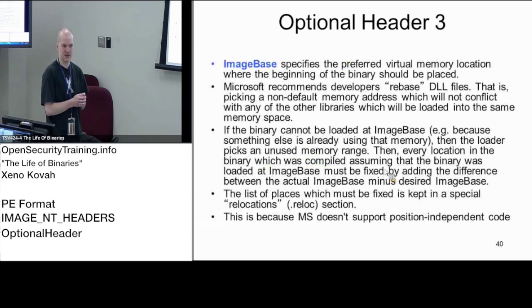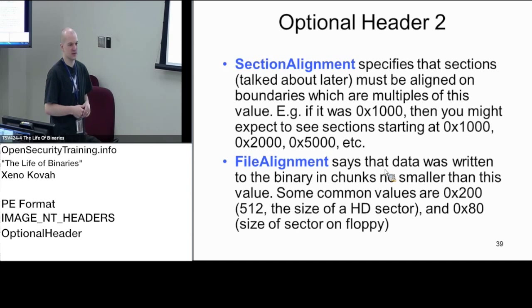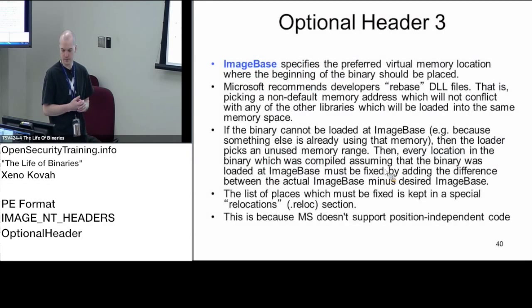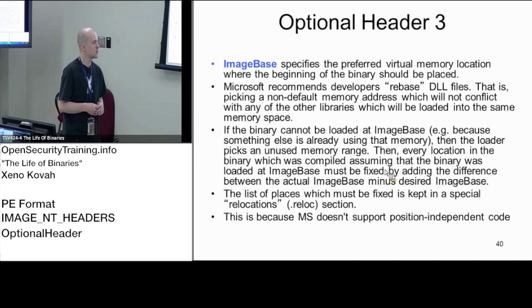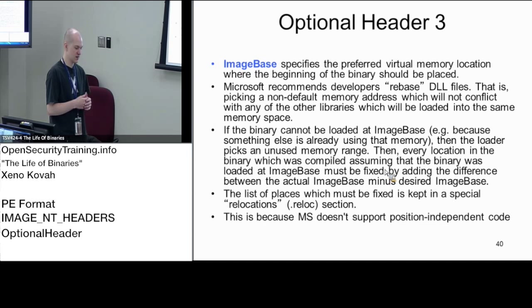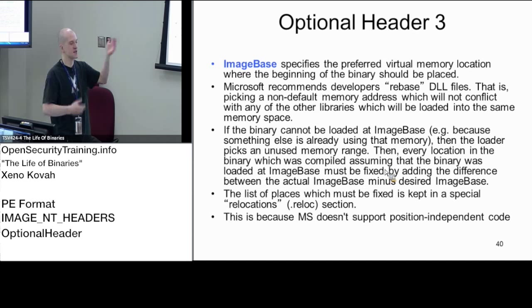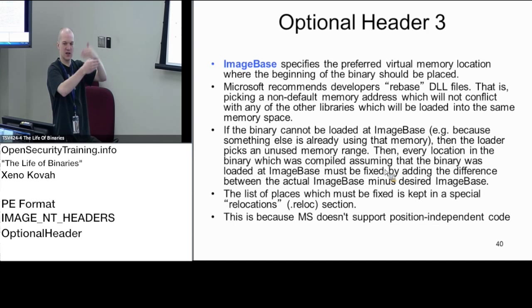Image base is basically the header saying 'I would like to be located at this address when I'm mapped into memory.' This can relate to performance optimizations. Microsoft calls it rebasing DLLs — figuring out addresses so all DLLs can ask for non-overlapping locations. So one DLL gets mapped here, another there, another there, so none of them overlap. The OS loader checks if the requested address is free and loads it there.